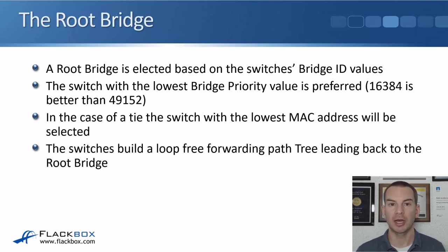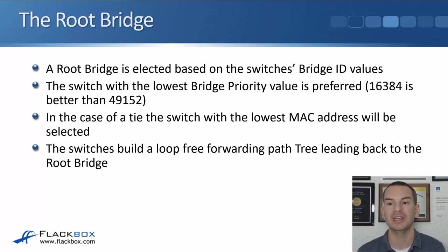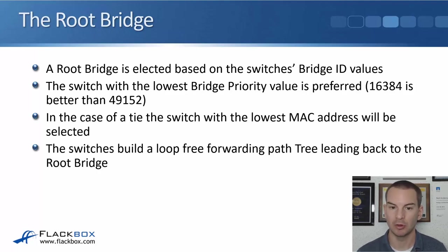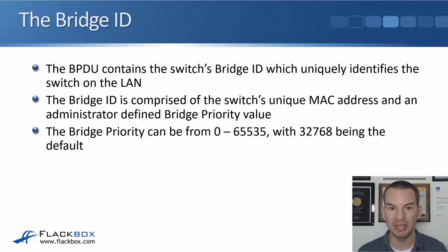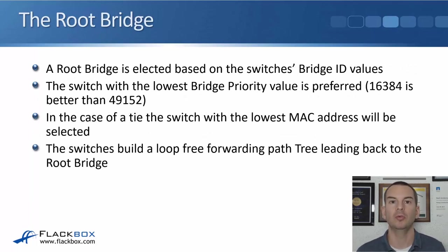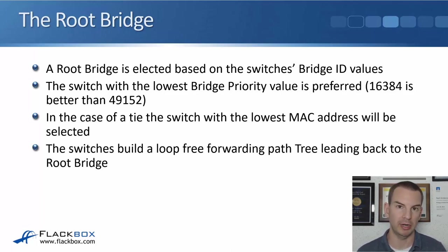A single root bridge is elected based on the switches' bridge ID values. The switch with the lowest bridge priority value in the LAN is preferred to be the root bridge — for example, a bridge priority of 16384 is more preferred than 49152. In the case of a tie, the switch with the lowest MAC address is selected. If you don't manually set bridge priority, all switches will have the default of 32768 and the one with the lowest MAC address becomes the root bridge. The switches then build a loop-free forwarding path tree leading back to the root bridge.